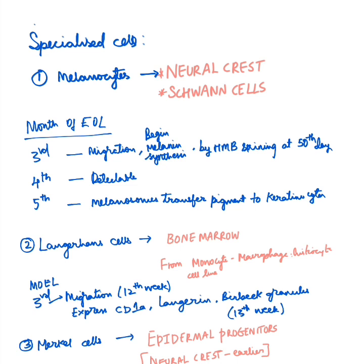Regarding the embryonic timeline for melanocytes: at the third month (12th week), migration of melanocytes occurs and melanin synthesis begins. By the third and fourth months they become detectable — this detection is by HMB staining, which can be positive as early as the 50th day of embryonic life. By the fifth month, there is transfer of melanosomes — the specialized organelles containing melanin pigment — to keratinocytes.